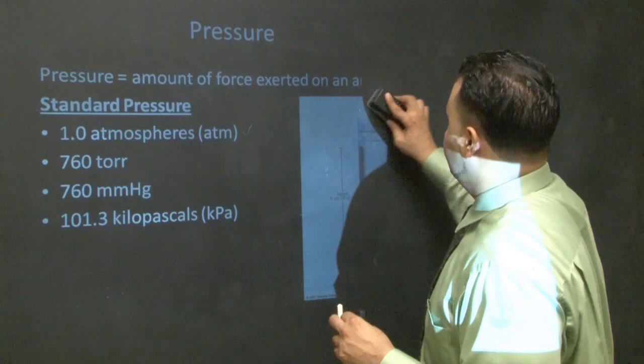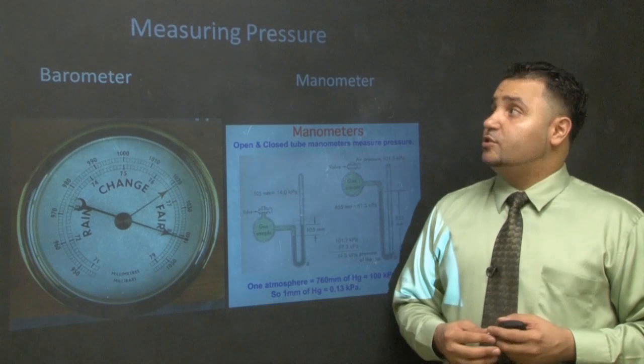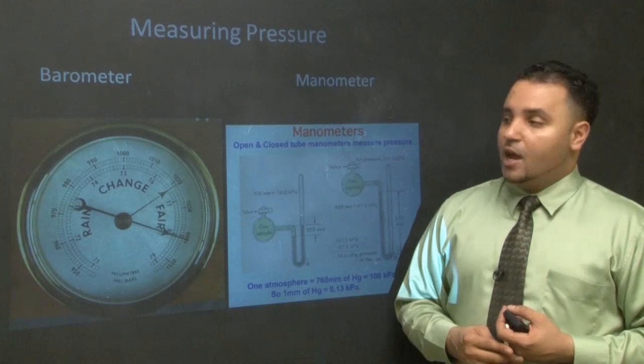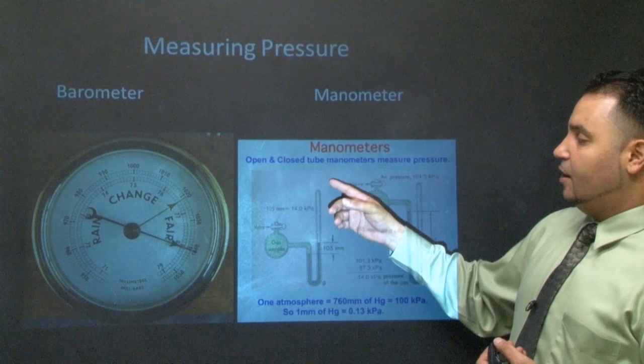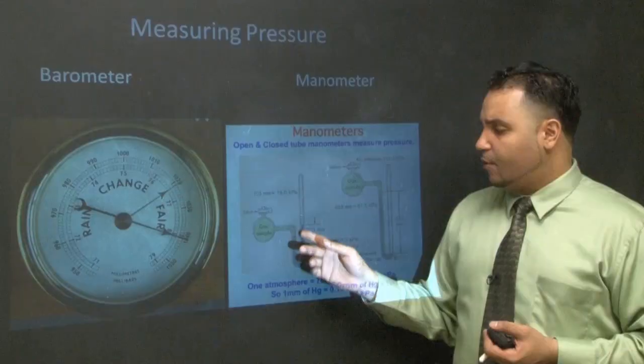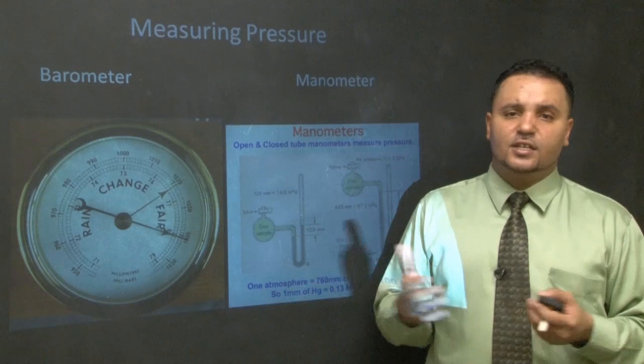To measure pressure, you need either a barometer — great for measuring atmospheric pressure, using units of millibars that you can convert to atmospheres — or a manometer, which releases gas against air pressure and allows you to read how much pressure is being exerted.